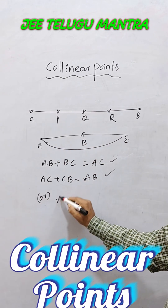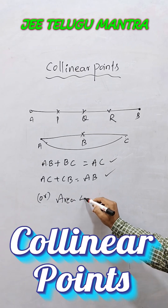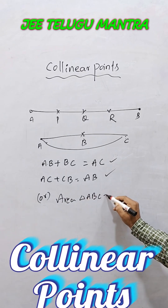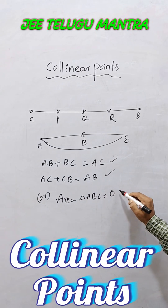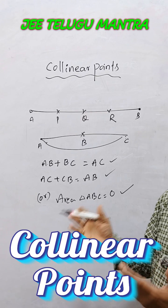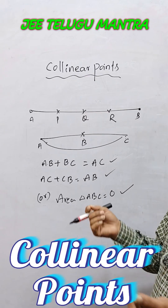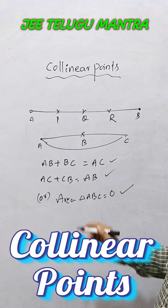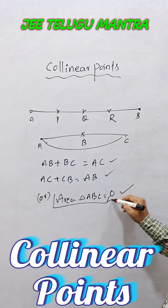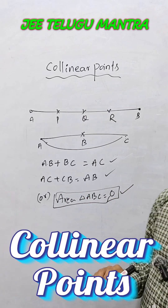Alternatively, if the area of triangle ABC is equal to zero, this is also called collinear. Because if there is no area, all points are collinear. Therefore, if the area of the triangle is equal to zero, then the given points are collinear.